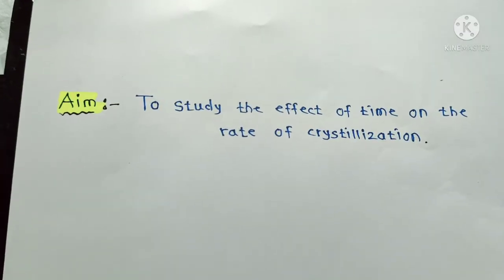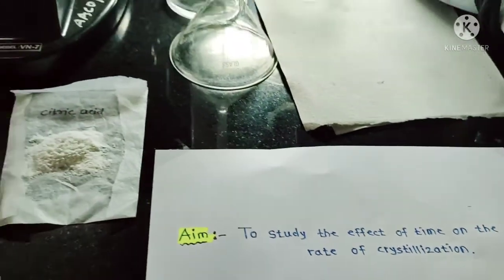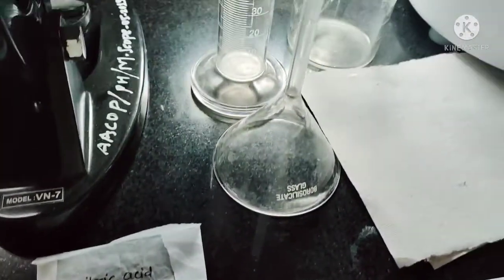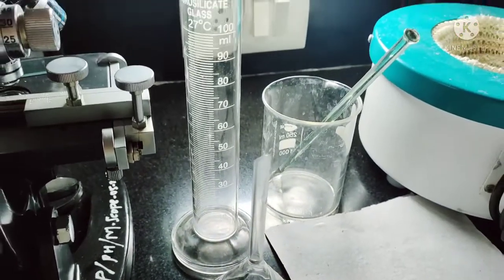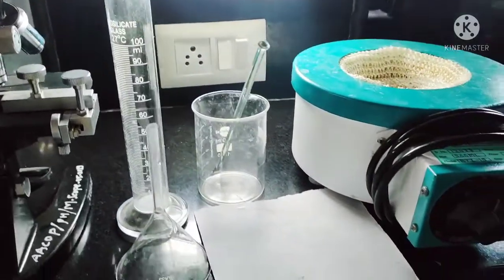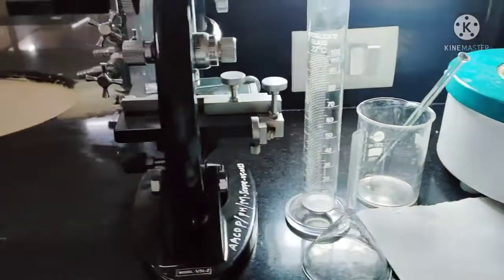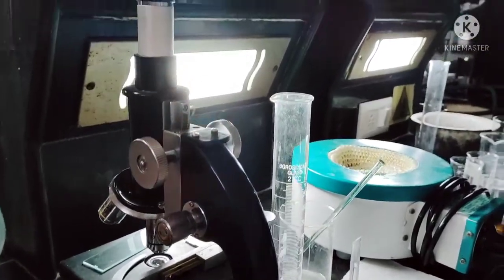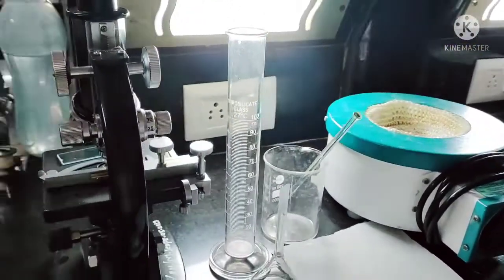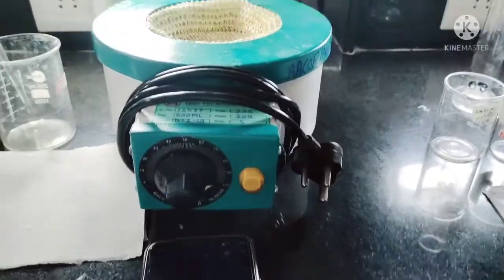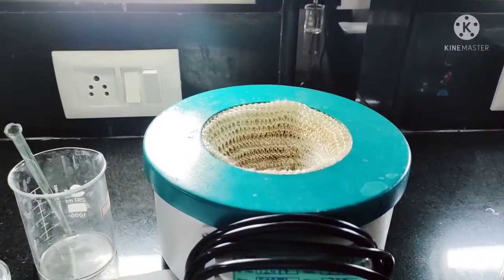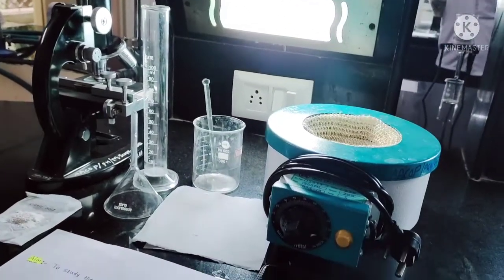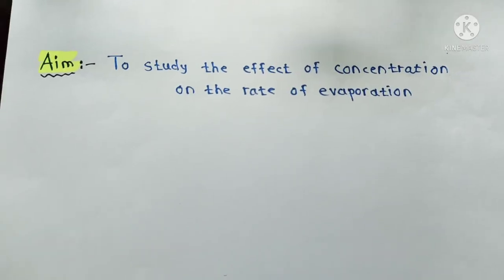The next one is to study the effect of time on the rate of crystallization. For this we require citric acid, measuring cylinder, Buchner funnel, microscope, beaker, glass rod, water, filter paper, heating mantle, and hot air oven. We also require slide and stopwatch.